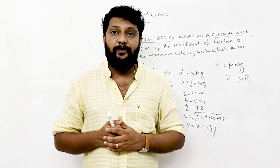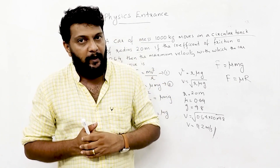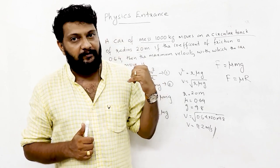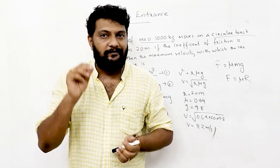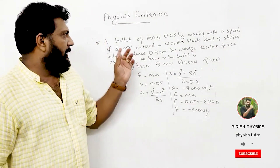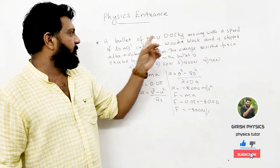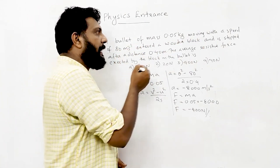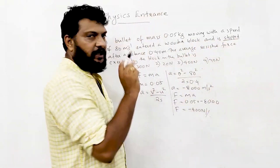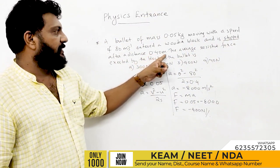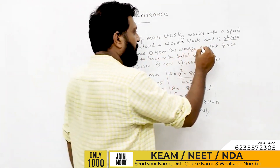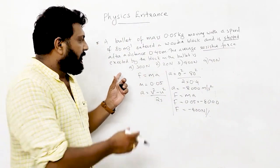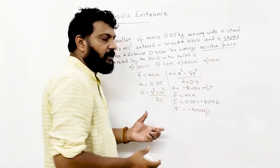The frictional force is equal to μmg. Next question: a mass of 0.05 kg moving with a speed of 80 m/s enters a wooden block and stops after a distance of 0.40 meter. The resistive force exerted by the block on the bullet — options are 300 N, 20 N, 400 N, 40 N.